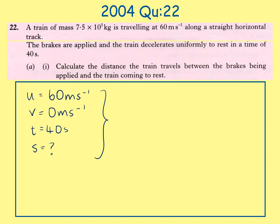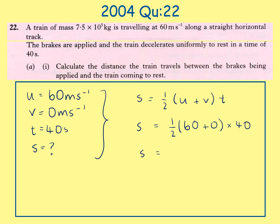Using s = ½(u + v)t: s = ½ × (60 + 0) × 40. This gives a final answer of 1200 metres, or 1.2 kilometres.